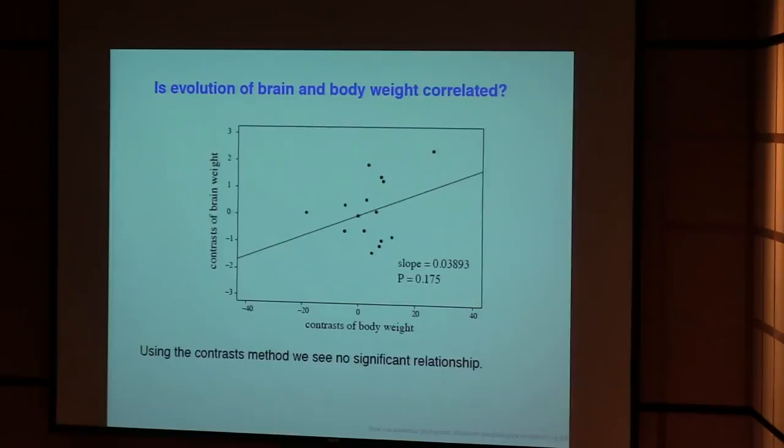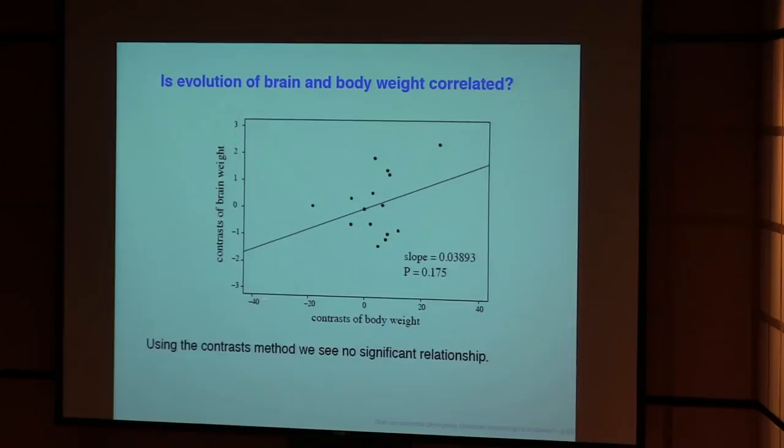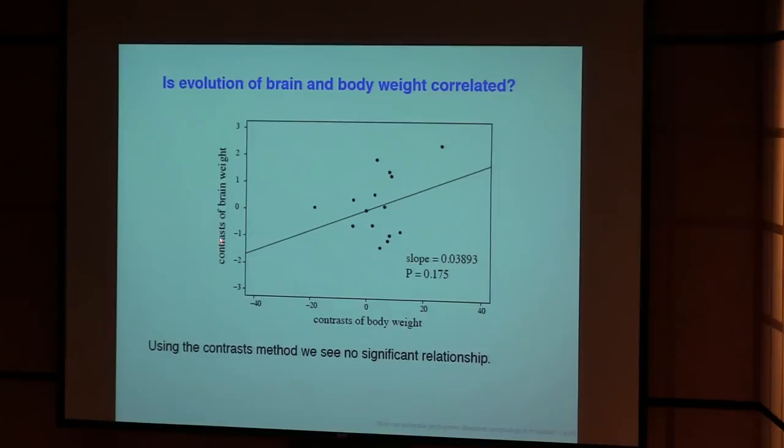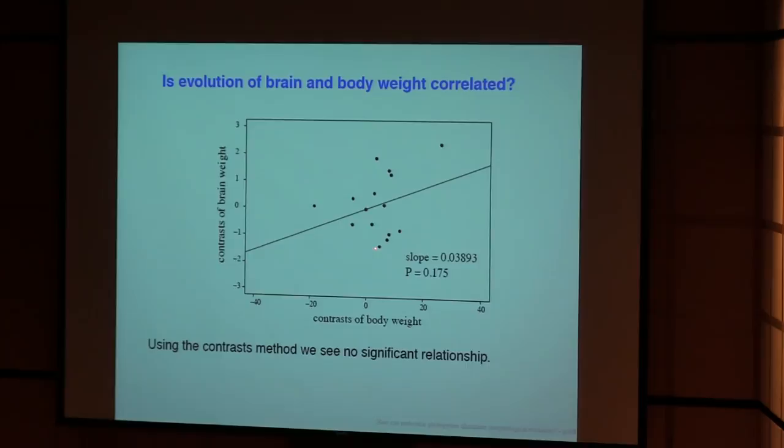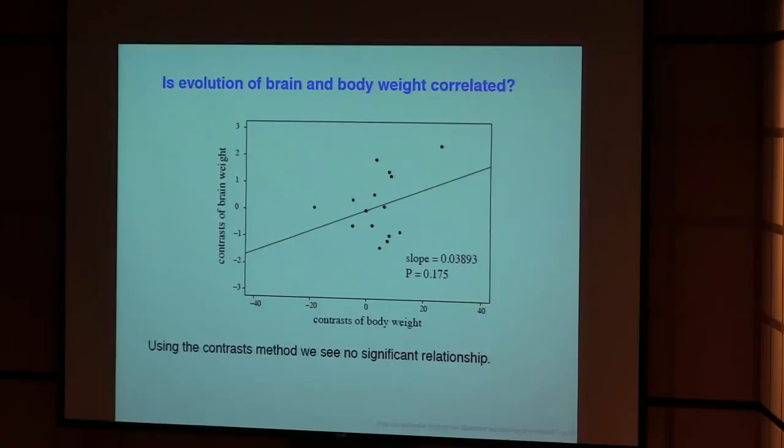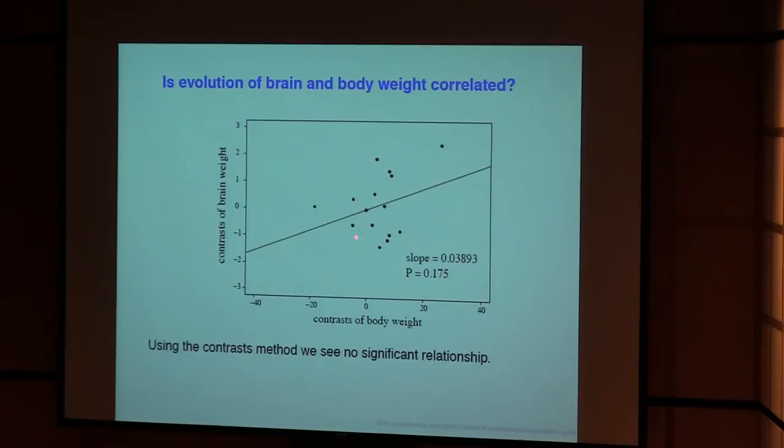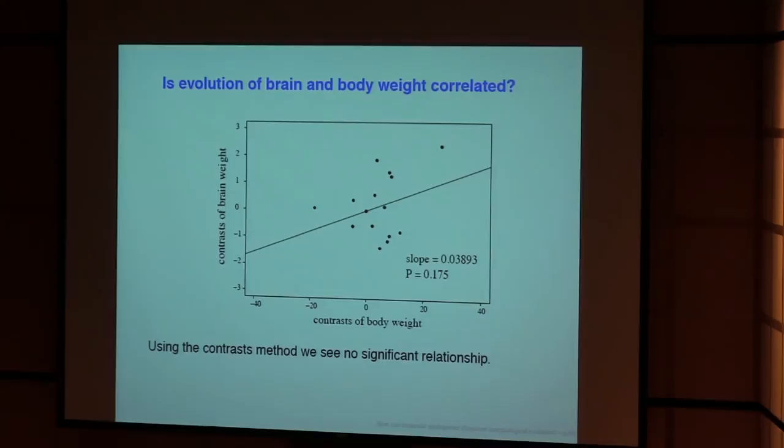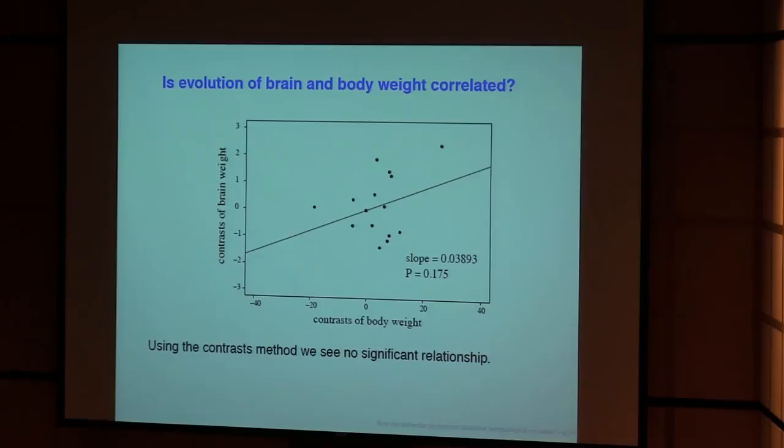Because in advance, when we're here and we're simulating evolution, we don't know whether C will be to the right on the scale of D or C will be to the left of D. Either one is equally possible, so the expected contrast is zero. So, if we take those appropriately standardized contrasts from this data set and we plot them, here they are. Now this is the contrast of brain weight against the contrast of body weight. And the result is, at first it looks like a positive relationship, but when you do this statistical test, you find that the slope, it has a positive slope, but the p-value is now not significant.